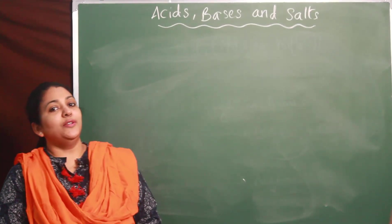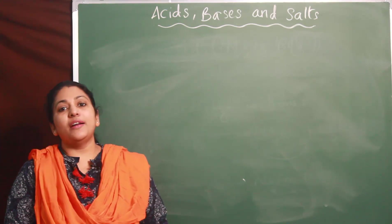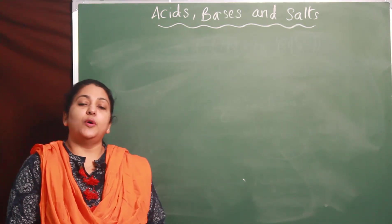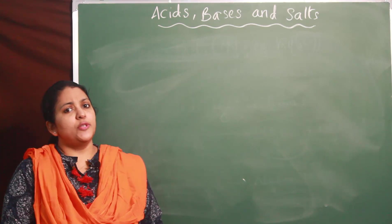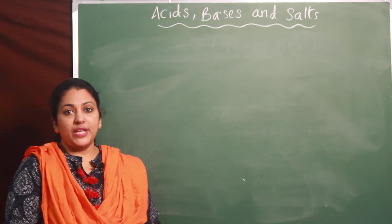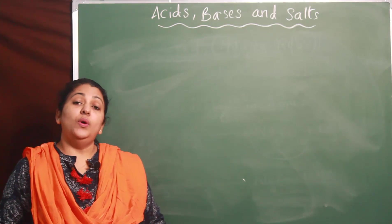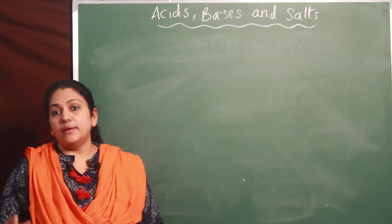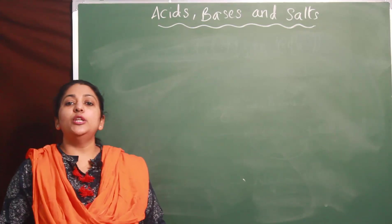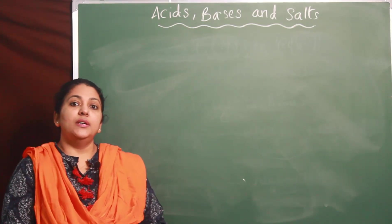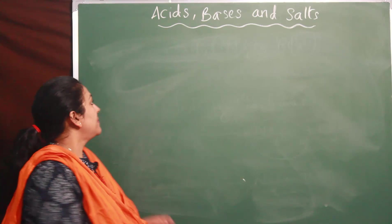Hello children, we are going to continue the same lesson - acids, bases and salts. In the previous session, in part 7, we discussed bleaching powder, baking soda, their methods of preparation and uses, and how baking powder and baking soda react to make cakes and food items soft and spongy. Today we are going to continue with two more salts: washing soda and plaster of Paris.